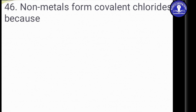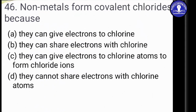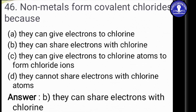Question 46: Non-metals form covalent chlorides because — covalent means sharing of electrons. The options are: Option A: they can give electrons to chlorine atoms to form chloride ions. Option B: they can share electrons with chlorine atoms. Since covalent means sharing, the answer is Option B — non-metals can share electrons with chlorine.